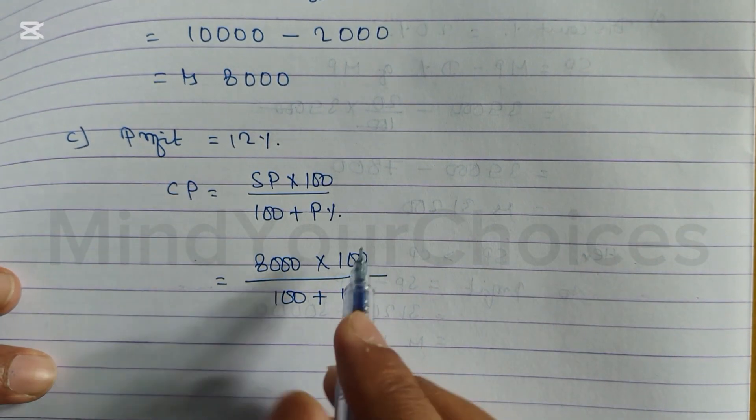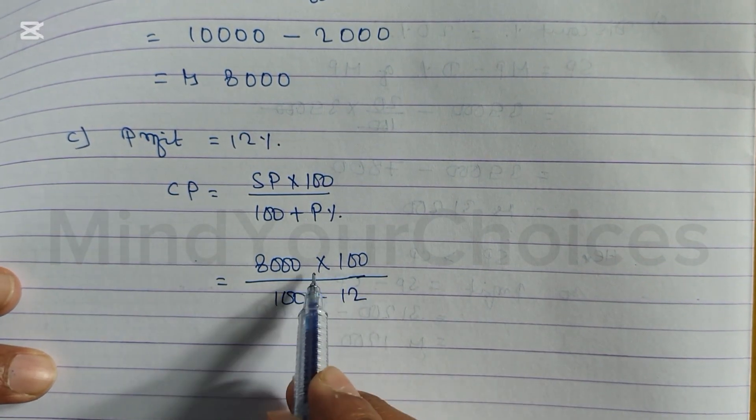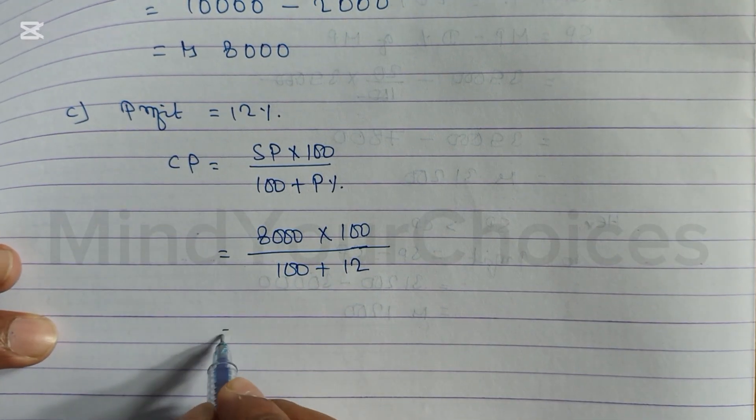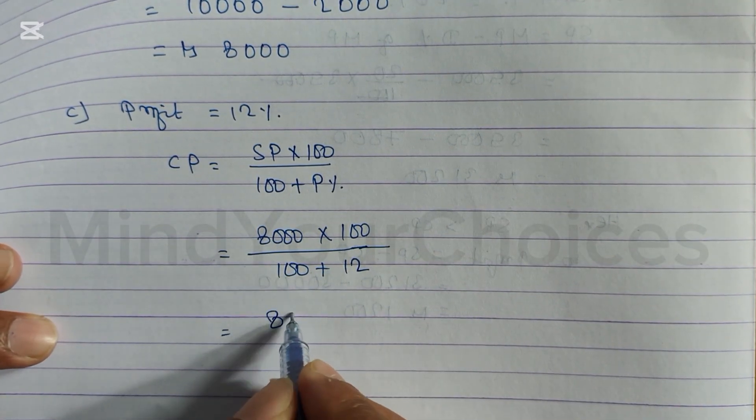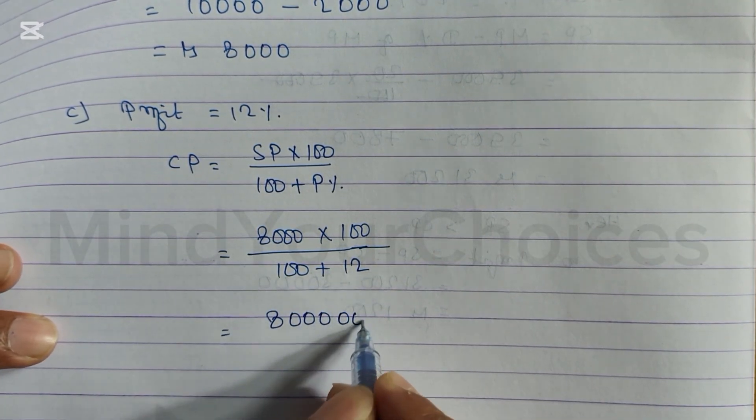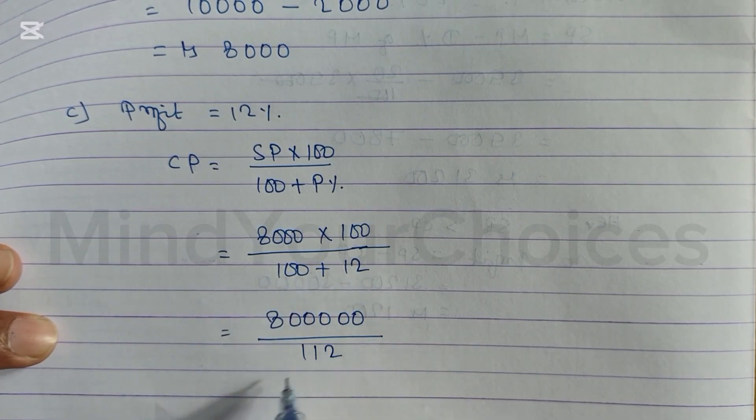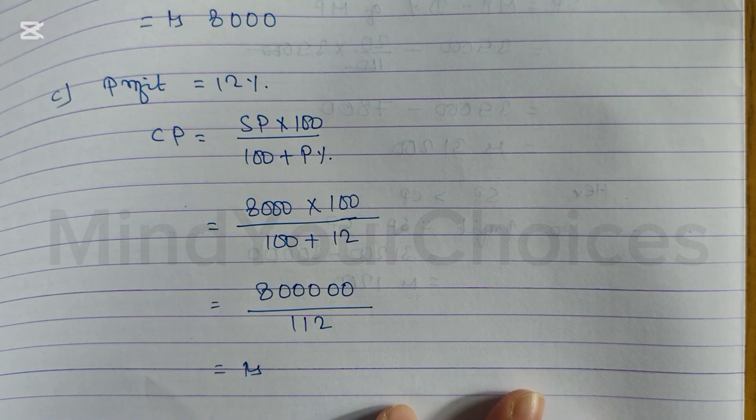So we write 12. Now we multiply 100 by 8: 8, 1, 2, 3, 4, 5, 0, divided by 100 plus 12 equals 112. Now we have to divide this.